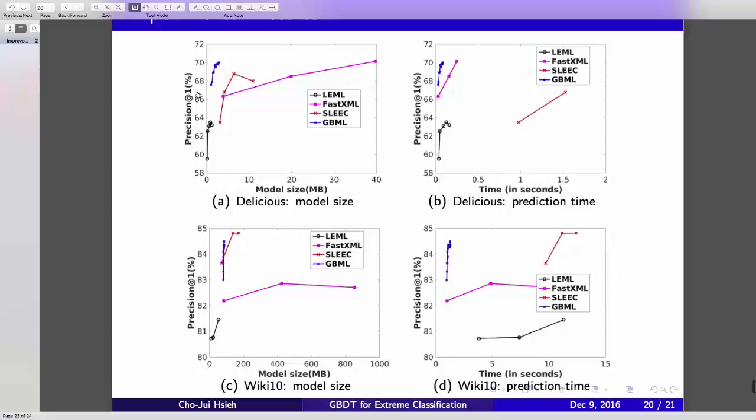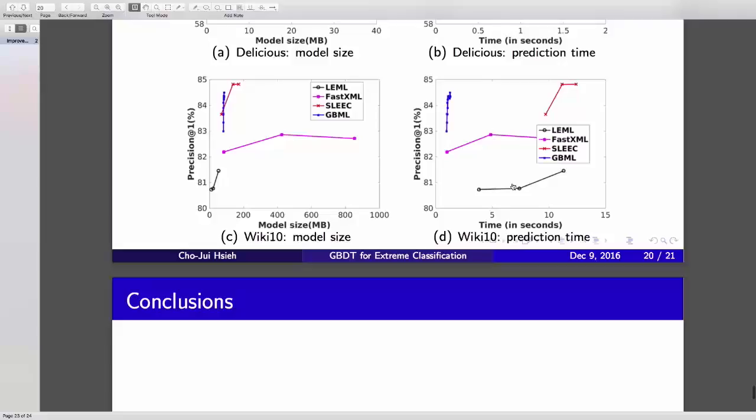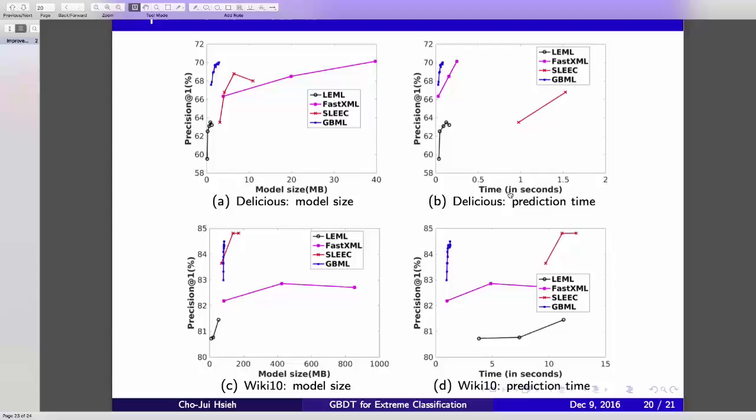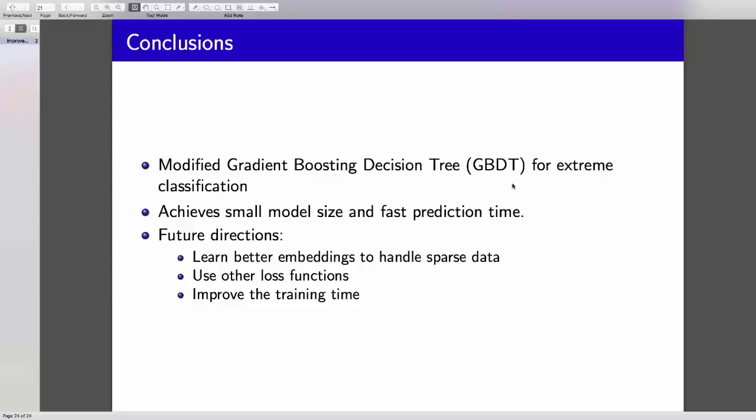In conclusion, we develop a modified gradient boosting tree for extreme classification. In the future, we want to further improve the training time and try other loss functions, because currently we just use square loss. As I mentioned in the first step, we use LENL to get the low dimensional feature embedding, so we may use other algorithms to learn better embedding for the GBDT algorithm. Thank you very much.